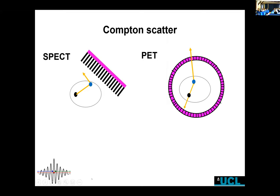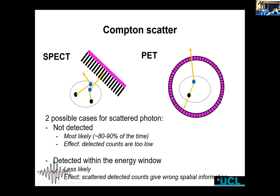Regarding Compton scatter: one case is the scattered photon escapes detection; the other case is where the scattered photon is detected. For PET people: a lot of students think that in SPECT you don't have any scatter because you think about the first picture, but obviously there is no reason why scatter can't get into your collimator. You also have scatter in SPECT — the ratios are not small: you can have 10–20% scatter in SPECT, and in whole-body PET you can have 30–40% of your counts being scattered, so it's quite important to take this into account.